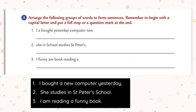What do you mean by subject? The subject tells us who or what the sentence is about. What do you mean by predicate? The predicate tells something about the subject. We can also say that a predicate is the part of a sentence that tells what the subject is doing or what the subject is.